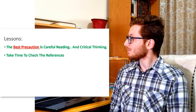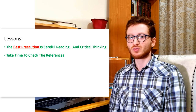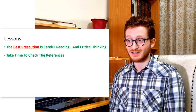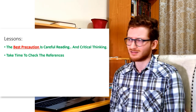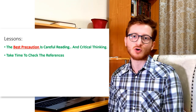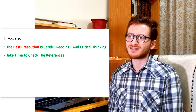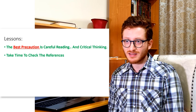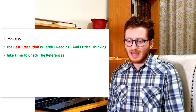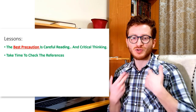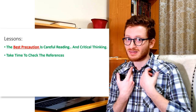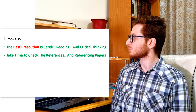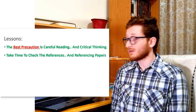Number two: always take time to check the references of the papers you are dealing with — check if that statement is really being correctly cited. I've seen many researcher colleagues say 'we've been cited,' but when they go to check that citation, the paper is talking about a different conclusion, saying something that was never said in the original paper. So this happens — take time to check the references and the referencing papers.